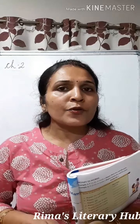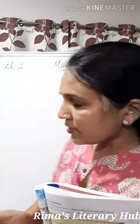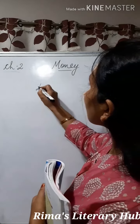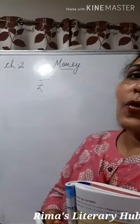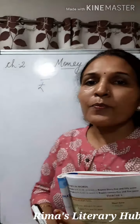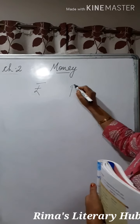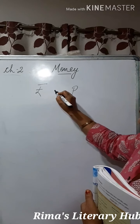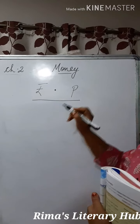The Indian rupee is written with a special symbol. Paise is written as 'p'. A point is used to separate rupees and paise.